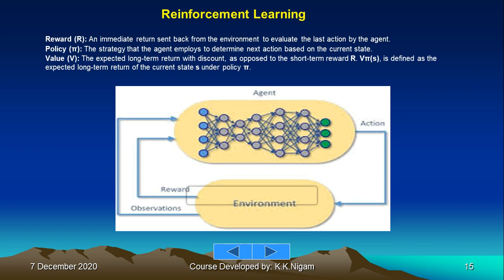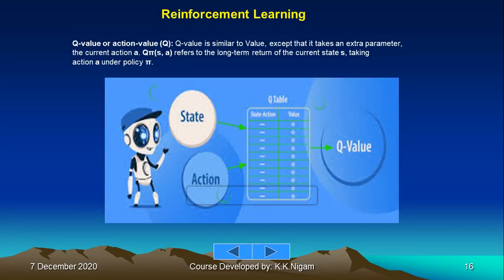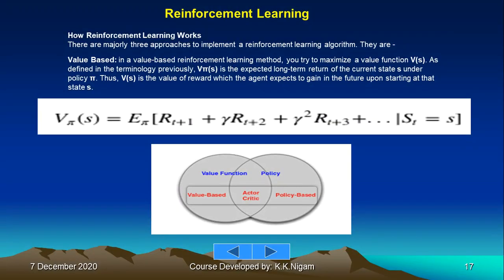Value (V) — the expected long-term return with discount, as opposed to the short-term reward R. V_π(s) is defined as the expected long-term return of the current state s under policy π. Q-value or action value Q — similar to value except it takes an extra parameter, the current action a. Q_π(s, a) refers to the long-term return of the current state s when taking action a under policy π.